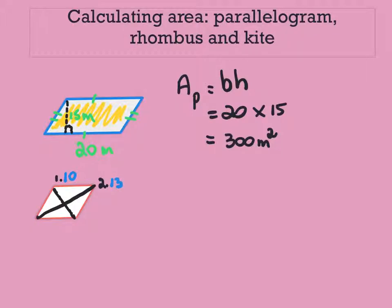Now our equation for our rhombus is A for area, rh for rhombus, and it's diagonal one times diagonal two divided by two.